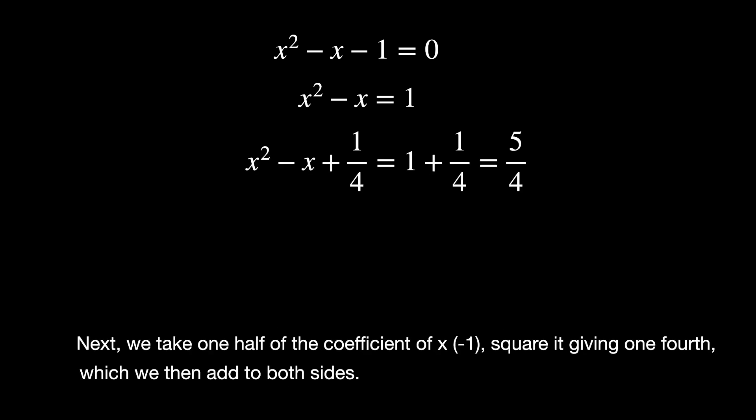Next, we take 1 half of the coefficient of x, which is minus 1, and square it, giving 1 fourth, which we then add to both sides.